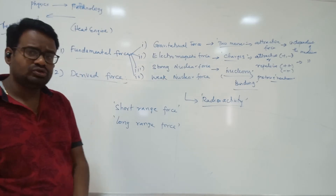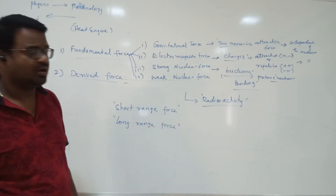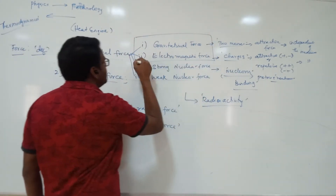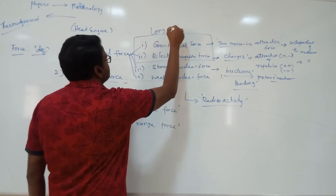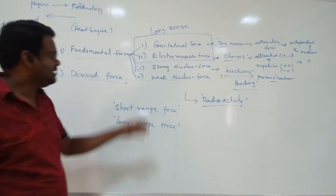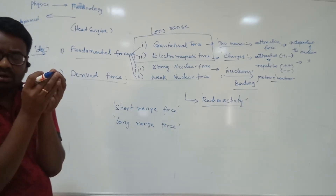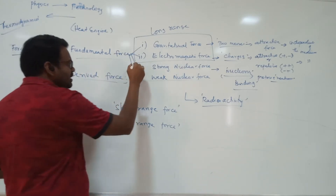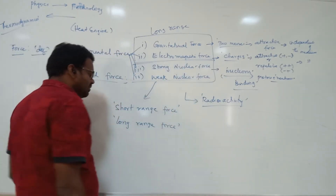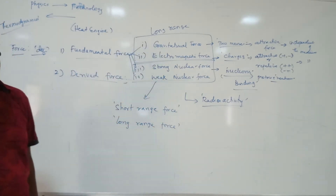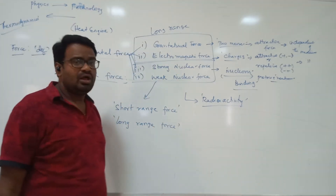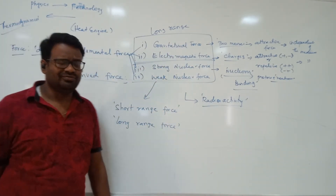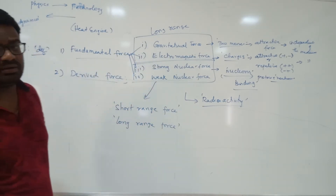Electromagnetic force also acts over different and large distances, so these two — gravitational and electromagnetic forces — come under long range forces. The nucleus is very small and nucleons are inside it, so the distance is much smaller. Accordingly, strong nuclear force and weak nuclear force come under short range forces.